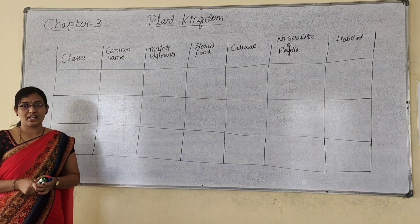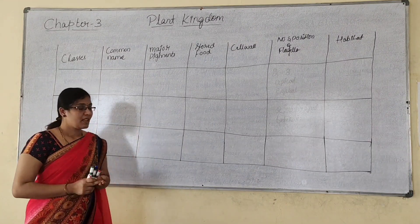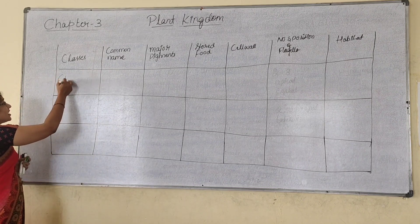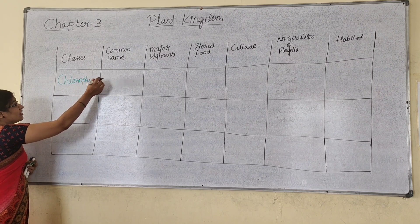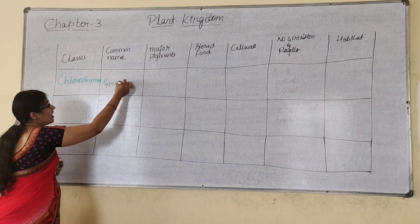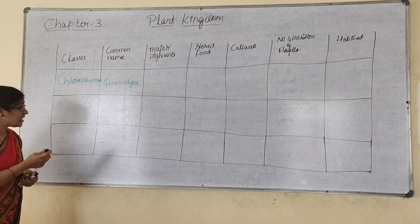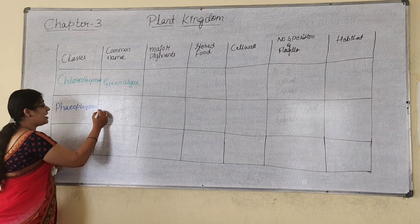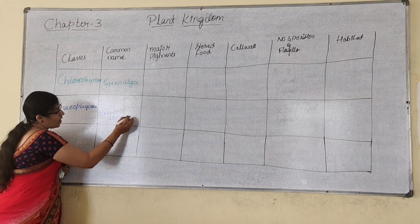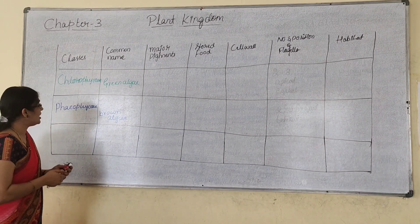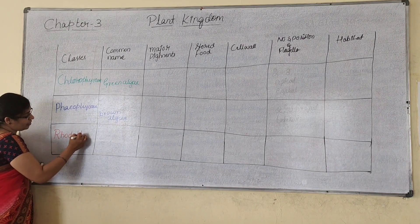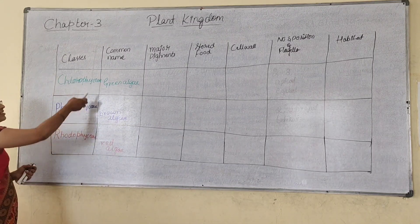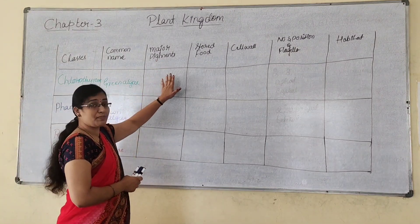Now let us compare the three different types of algae — green algae, brown algae, and red algae — by drawing a table. There are three classes: chlorophyceae, commonly known as green algae; phaeophyceae, commonly called brown algae; and rhodophyceae, commonly known as red algae. The table covers pigments, stored food material, cell wall, number and position of flagella, and habitat.